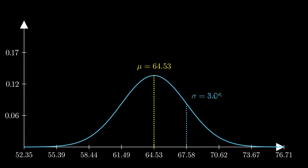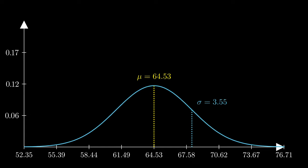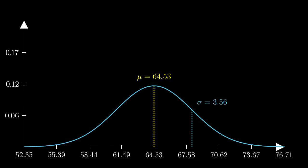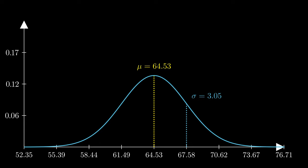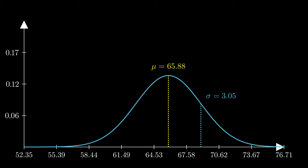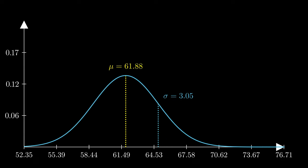Sigma, the standard deviation, is going to be 3.05. The wider you make sigma, the standard deviation, the wider the bell curve is going to be. As you move mu around, the mean, you'll see that it just shifts the entire bell curve left and right.